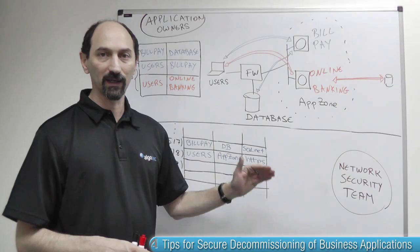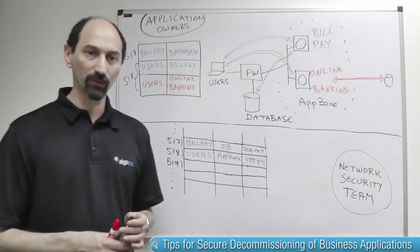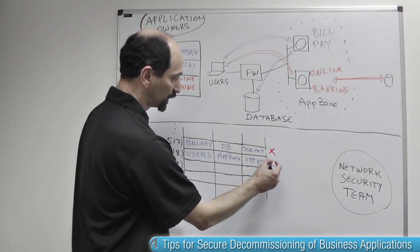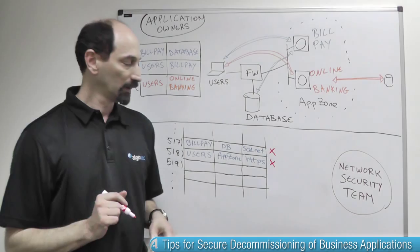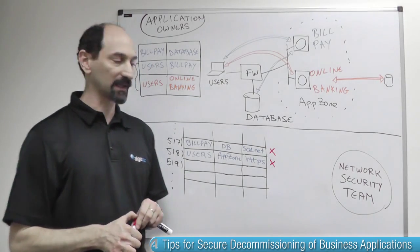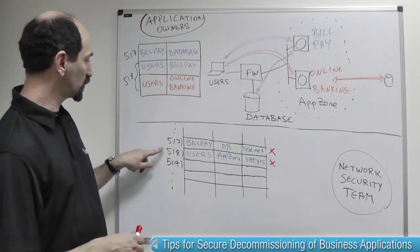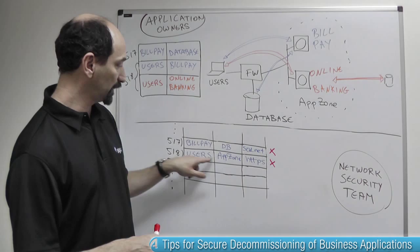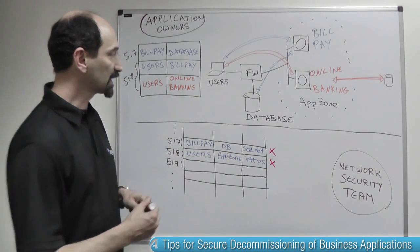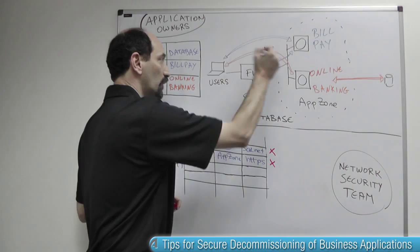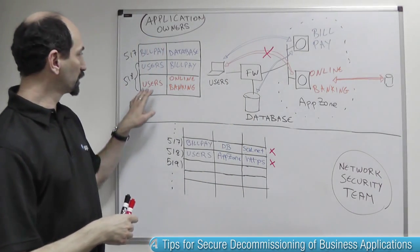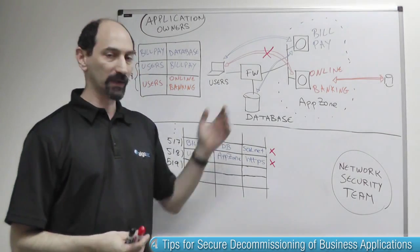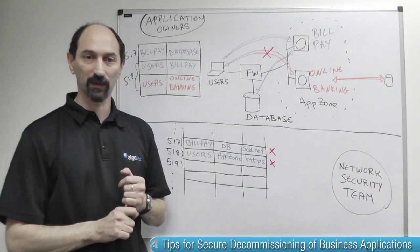If they decide to retire the rules, they need to do so very carefully. If they blindly remove both rules, there can be very unpleasant side effects — because rule 518 is shared across multiple applications. Removing rule 518, which allows traffic to the whole application zone, would as a side effect break the traffic patterns required by the online banking application that is still functioning, creating a network outage, which is very serious.